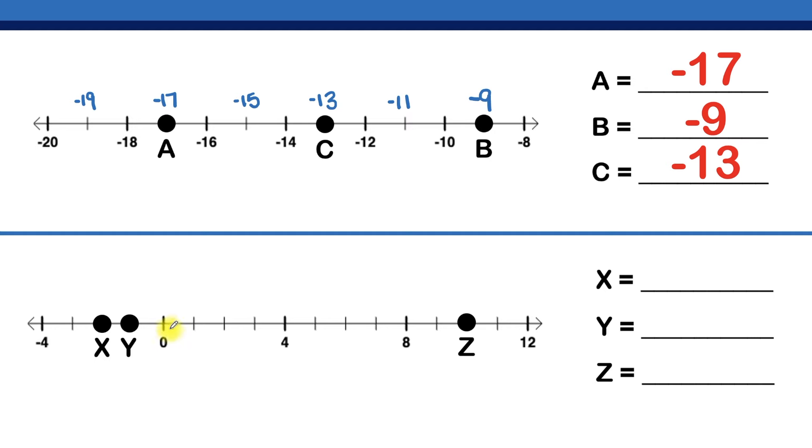We can't count by threes. If we try twos, it would be zero, two, and four would be here. So the only value that works is going by ones.